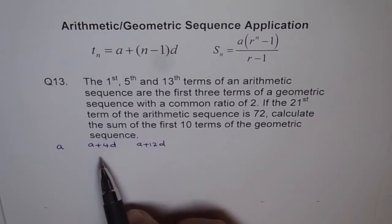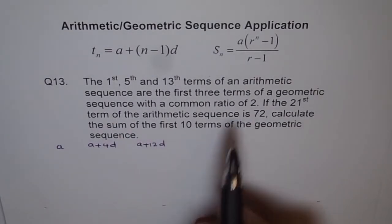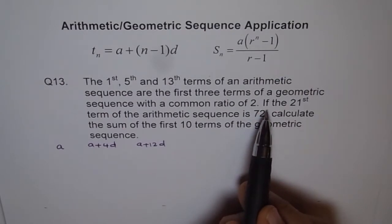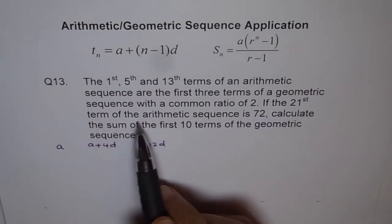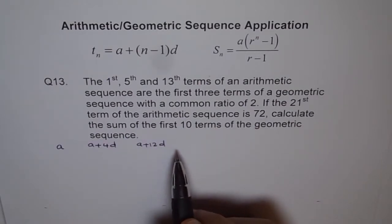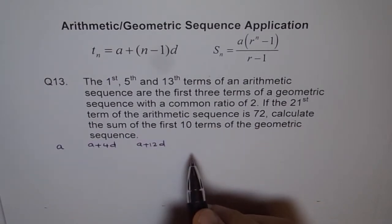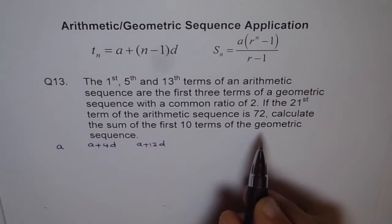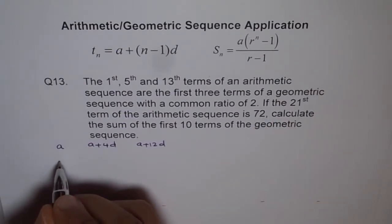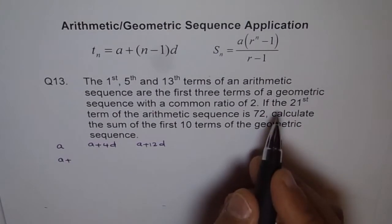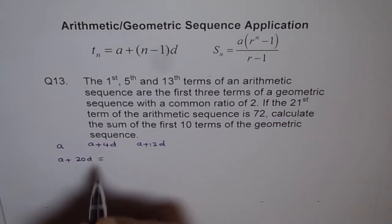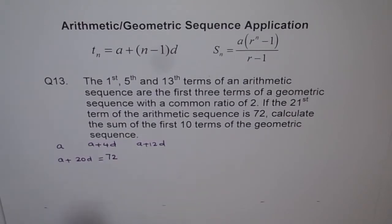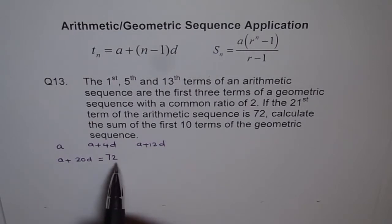Since these are the first three terms of the geometric sequence, their ratio is 2. One more piece of information is given: the 21st term of the arithmetic sequence is 72. The 21st term is A plus 20D, and this equals 72.